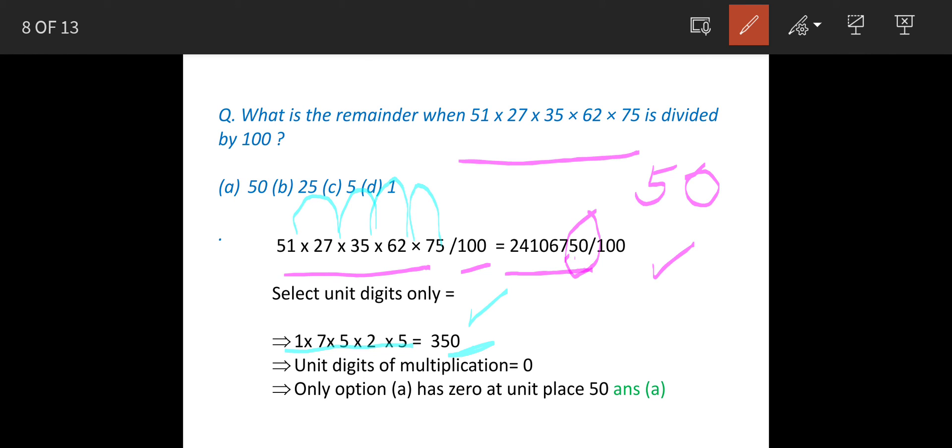Whatever number we get here at unit place will always be the unit digit of this number, will always be the unit digit of this multiplication.